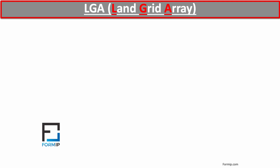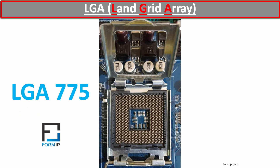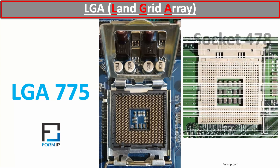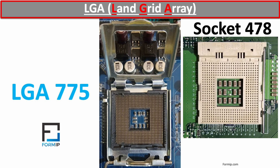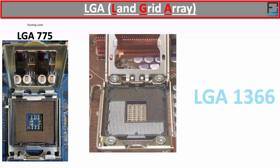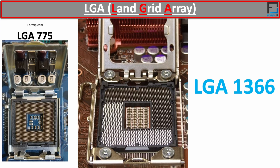We'll start with Intel sockets, which use LGA — land grid array — support. The first is the LGA-775 socket, also known as Socket T. It was released in 2004 and has 775 pins. The LGA-775 was the successor to Socket 478 and was designed for Pentium 4 and Pentium dual-core processors. Next is the LGA-1366, which has 1,366 pins and is known as Socket B. It was released in 2008 as the successor to the LGA-775, and was used with Intel Core i7 and Xeon processors.